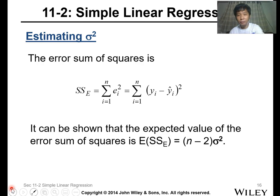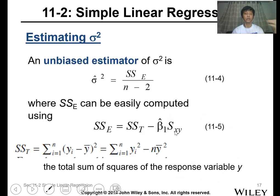It can be shown that the expected value of the error sum of squares, expected SSE, is equal to n minus 2 times sigma squared. So calculating sigma squared, this is just your SSE over n minus 2. The n minus 2 will be the degrees of freedom for your SSE calculation.